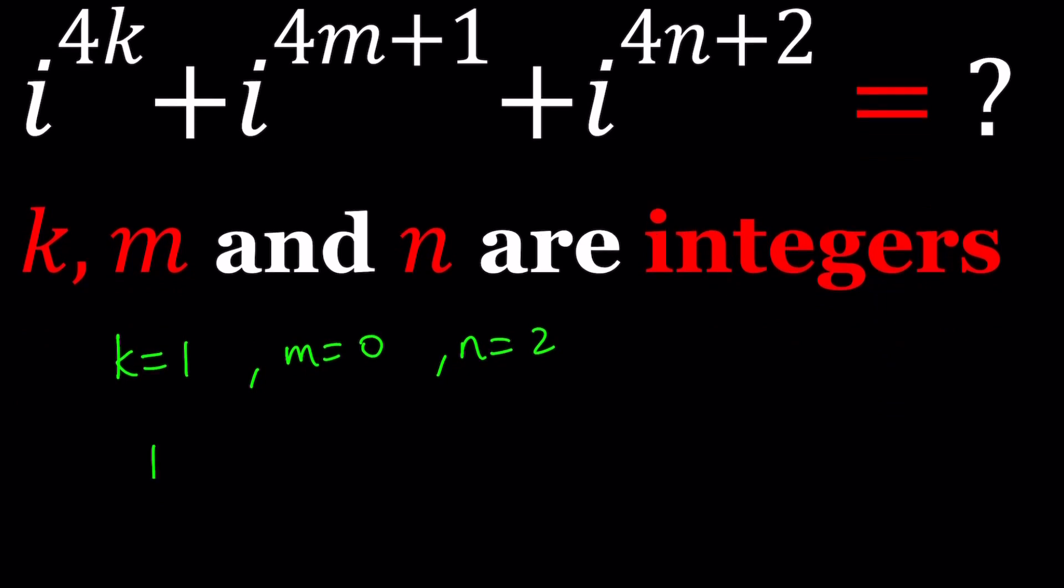We get i to the 4th power plus i to the power 1 plus i to the power 6. And then we can evaluate what i to the 4th is, so on and so forth. This is going to give us 1. i to the 1st power is just i. And i to the 6th power, if you remember, we said that i to the 4th is 1. So i to the 6th is going to be i to the 4th times i to the 2nd. And i to the 4th is 1, so this is going to be i squared, which is negative 1. So we're going to get a negative 1. And the 1 and the negative 1 cancel out, and we end up with i.